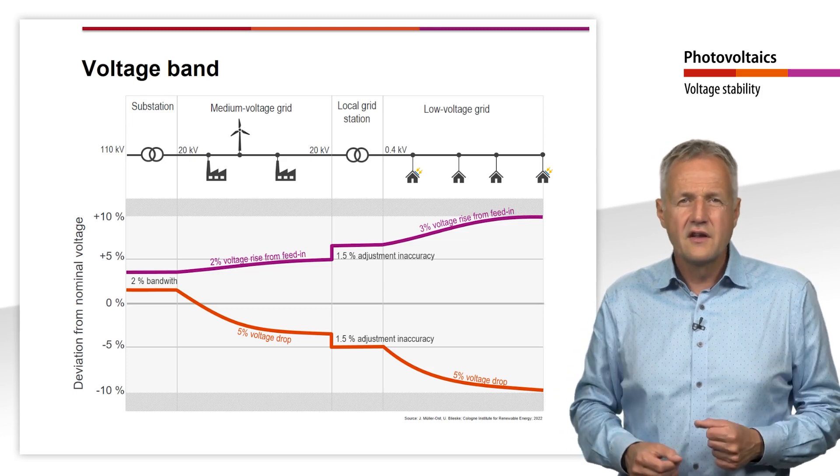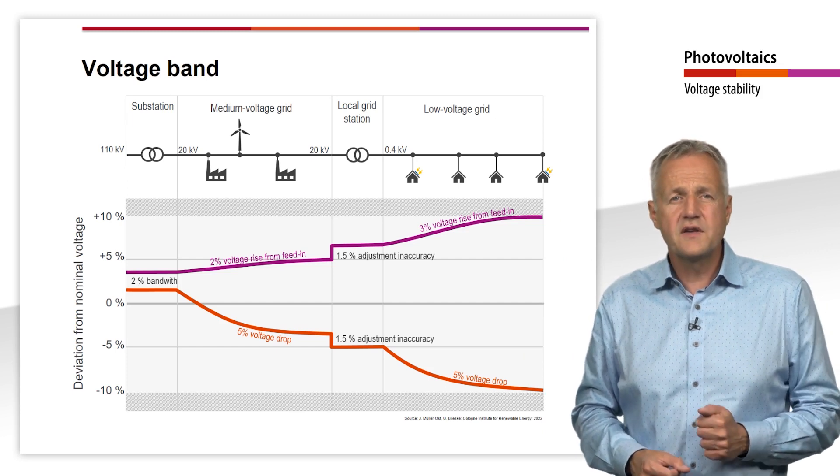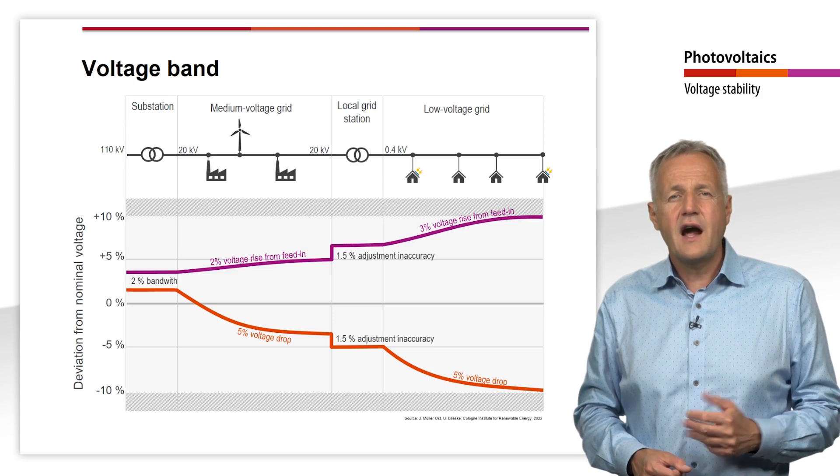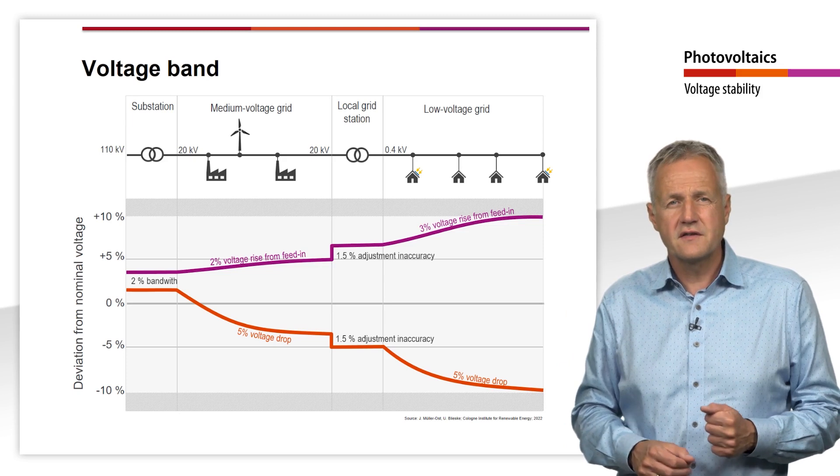However, if the voltage increase is too high, this does not mean that the PV system cannot be connected per se. There are a number of ways to counteract the voltage rise caused by a PV system.